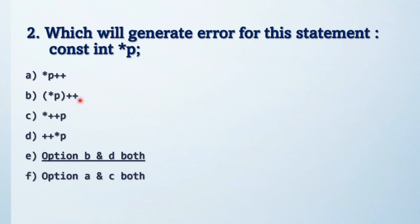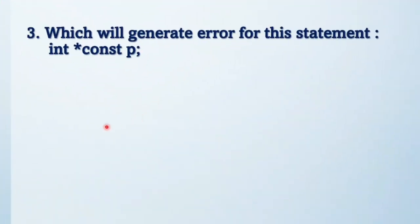Next question: which will generate error for this statement: integer star const p? See the difference. Previous question has const integer star p. Here integer star const p. Const p means address is constant. Now you will get the idea. What is your answer? Let me know.